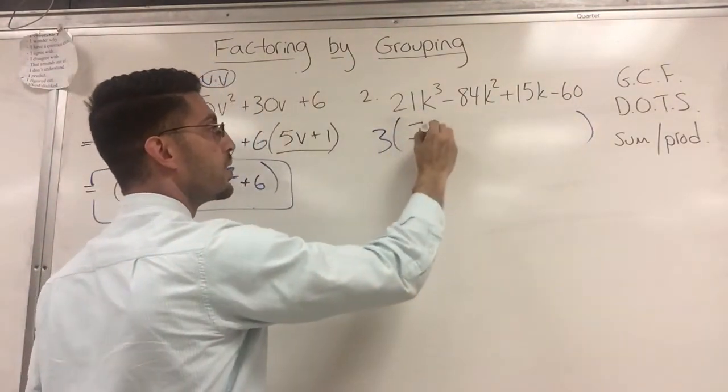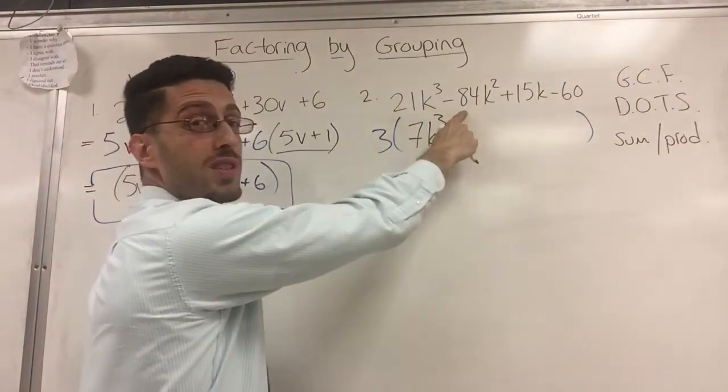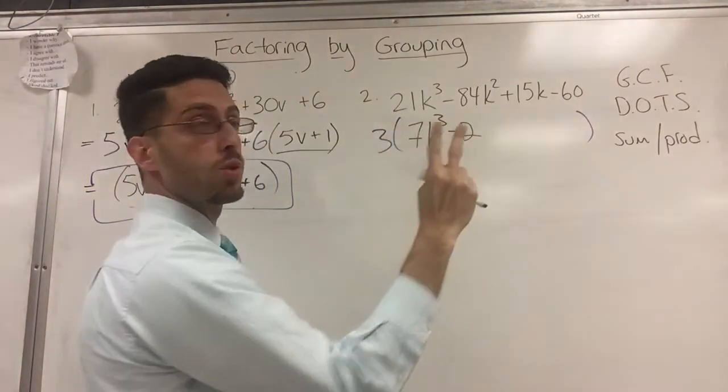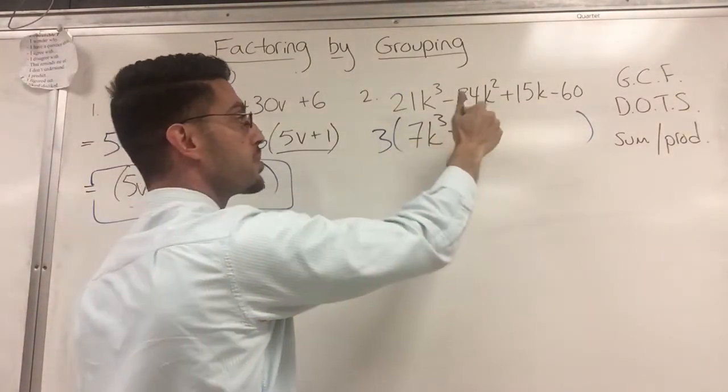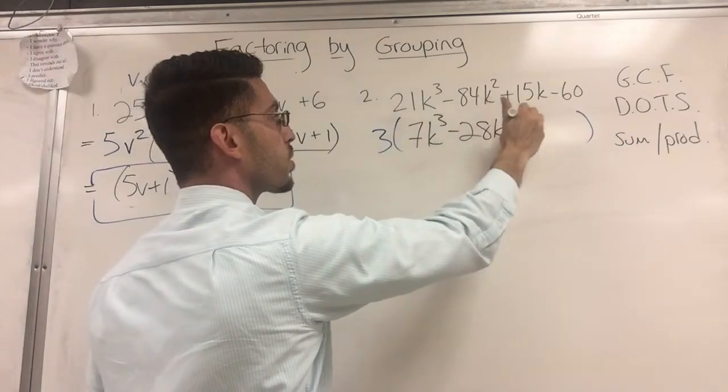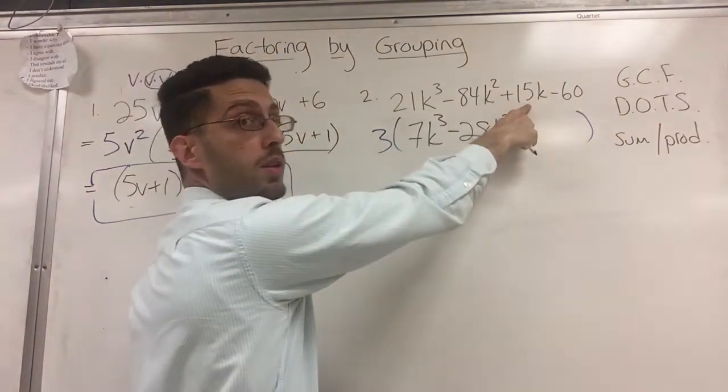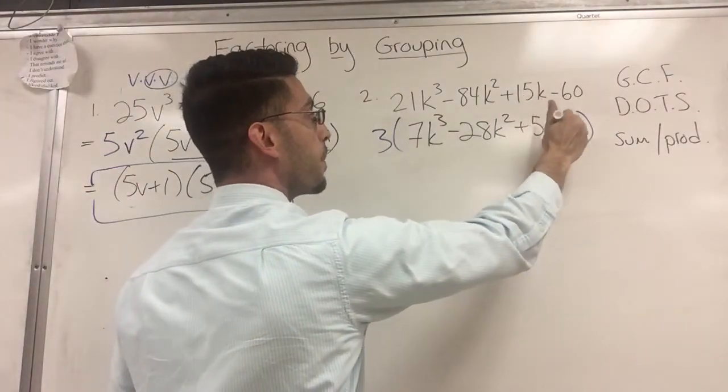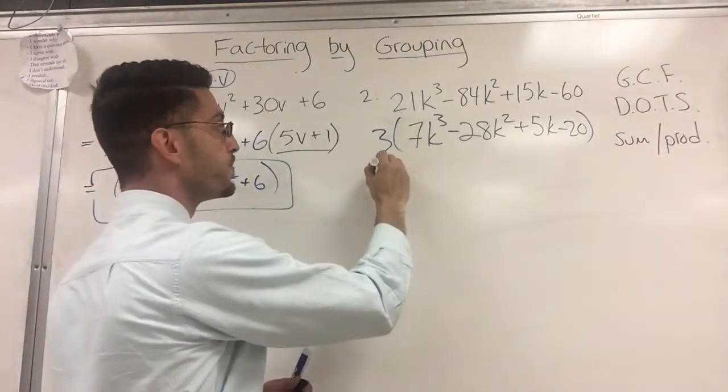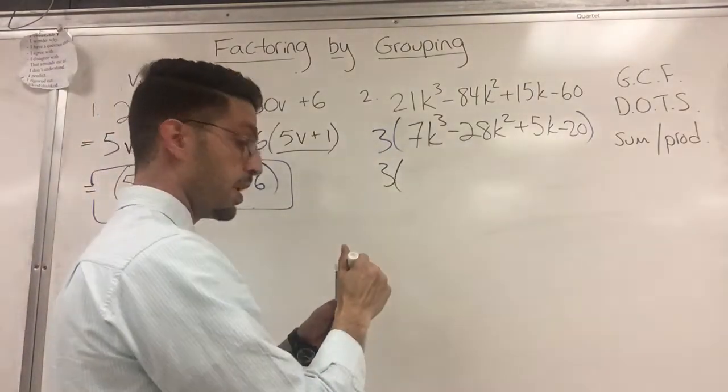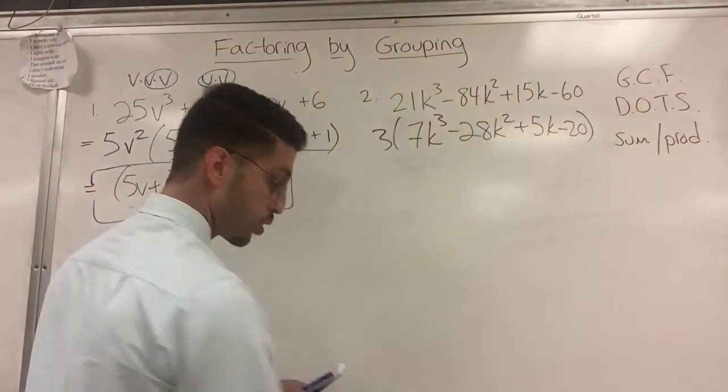This is 7K³ minus 3 goes into 8 twice with a remainder of 2, which makes this a 24. 3 goes into 24, 8 times. That's 28K² plus. What's left here? 15 divided by 3 is 5K minus. And that's a 20. Now that the GCF is out of the way, we can factor by grouping.